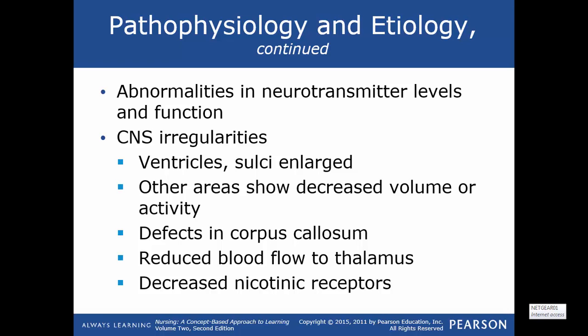They also have abnormalities in neurotransmitter levels and functions. Central nervous system irregularities are seen on brain imaging studies. The ventricles, particularly the sulci, are enlarged. Other areas show a decreased volume or activity. There are defects seen in the corpus callosum, which affects communication between the hemispheres of the brain. There will be a reduction in blood flow to the thalamus, causing sensory information overload — everything coming at them at once and very escalated. They will have decreased nicotinic receptors, making it hard to form new memories. Many schizophrenics will unknowingly start to smoke, and they think it may be to compensate for this deficiency.